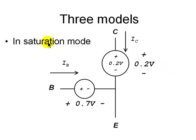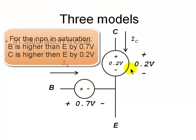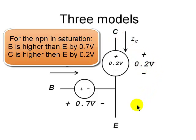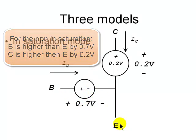Finally, in saturation mode, there is no current amplification. The transistor merely maintains the collector 0.2 volts higher than the emitter, and the base 0.7 volts above the emitter.